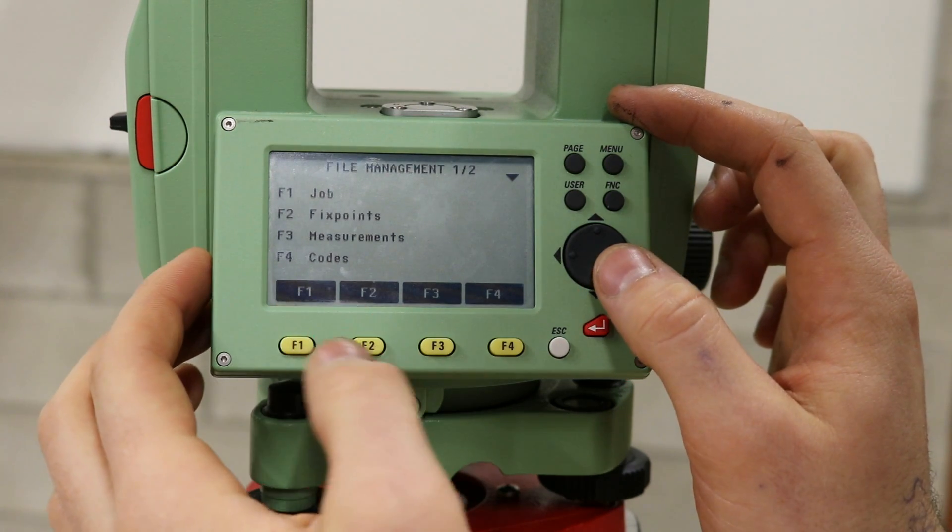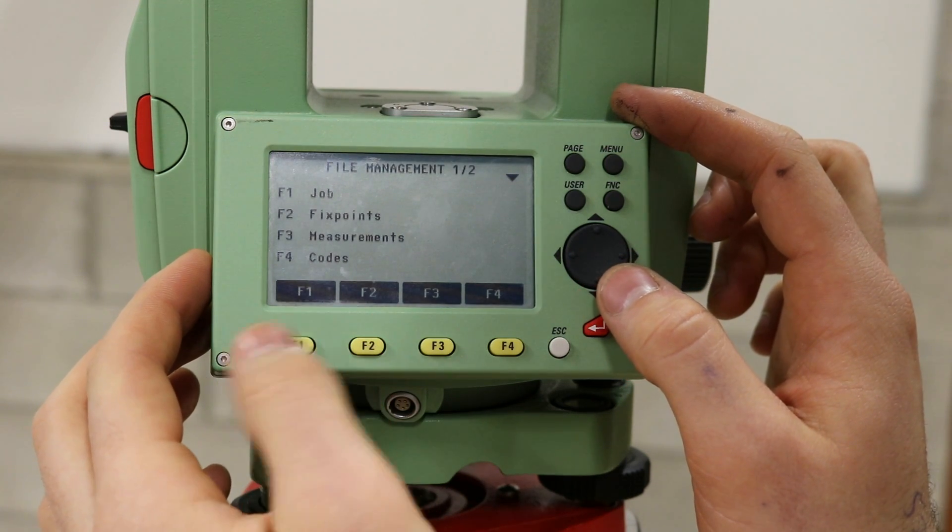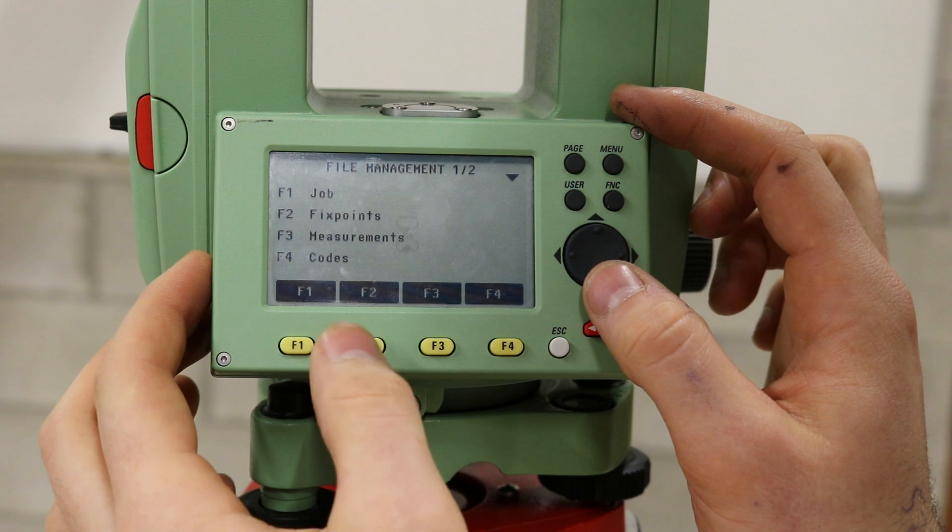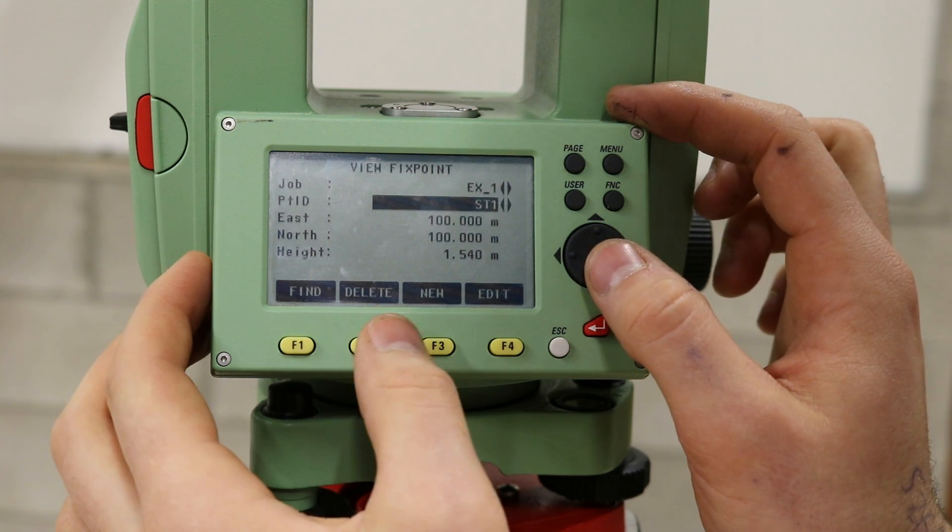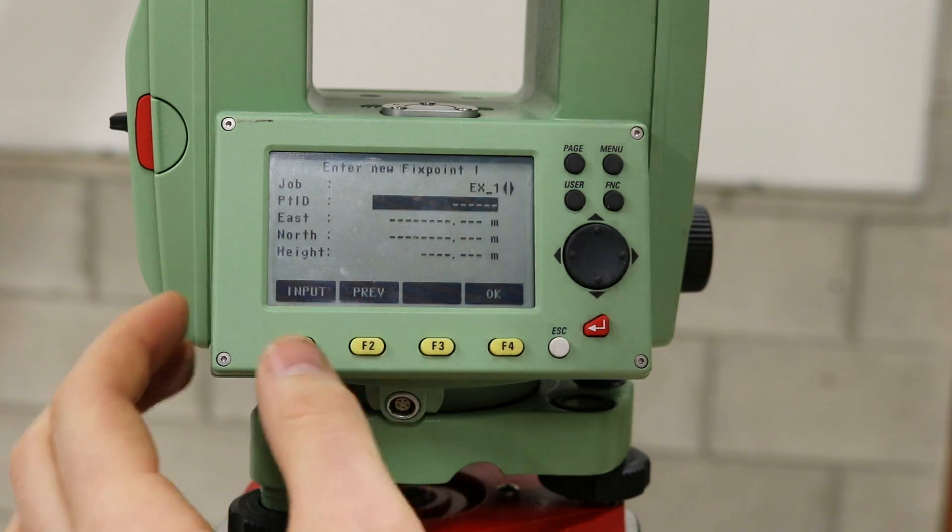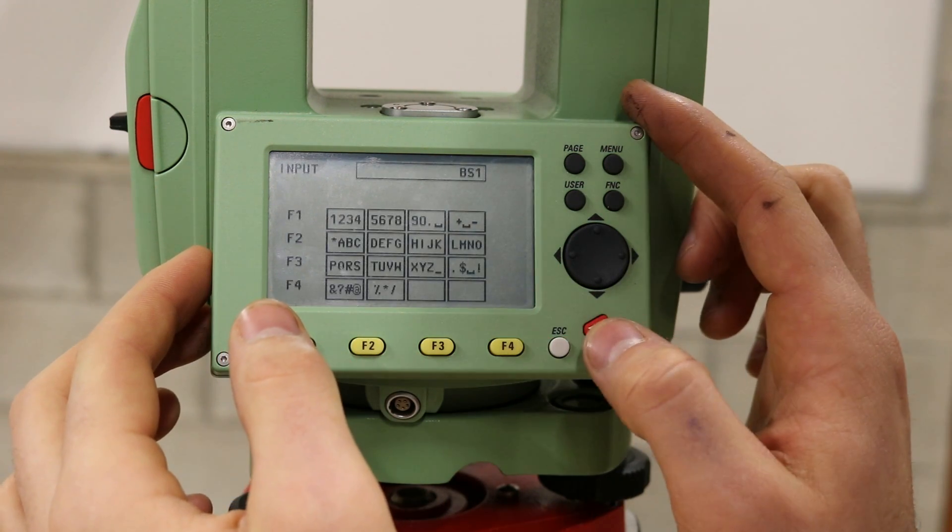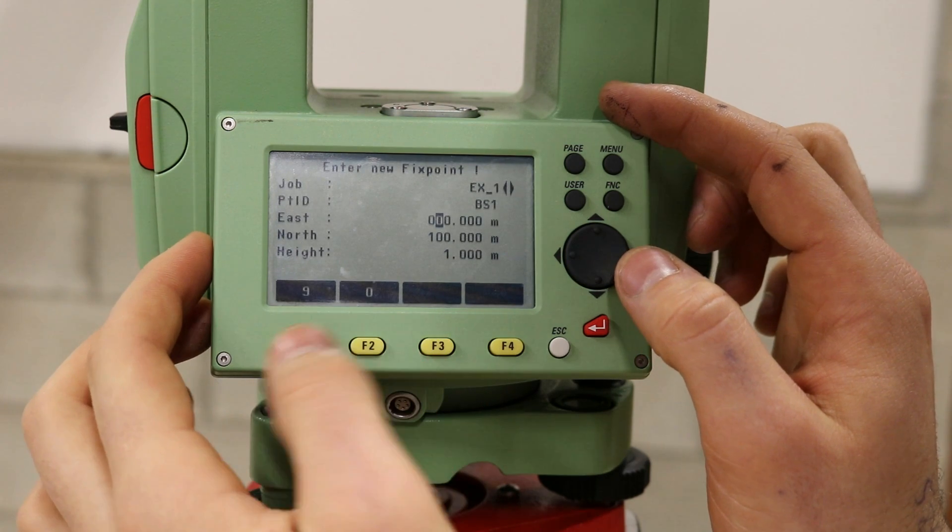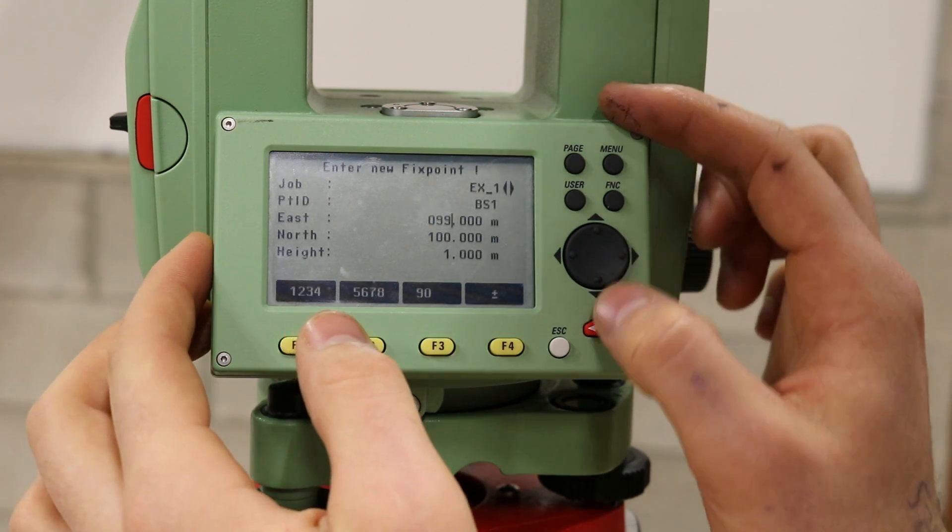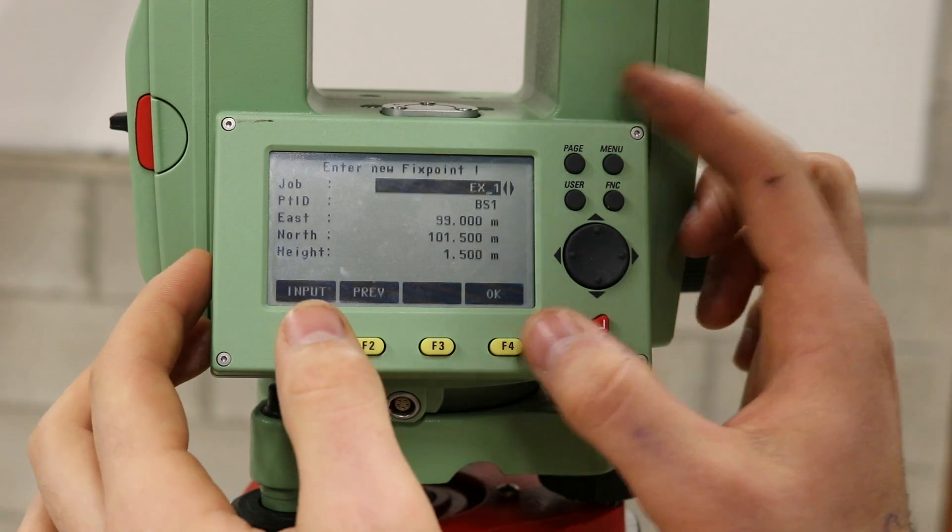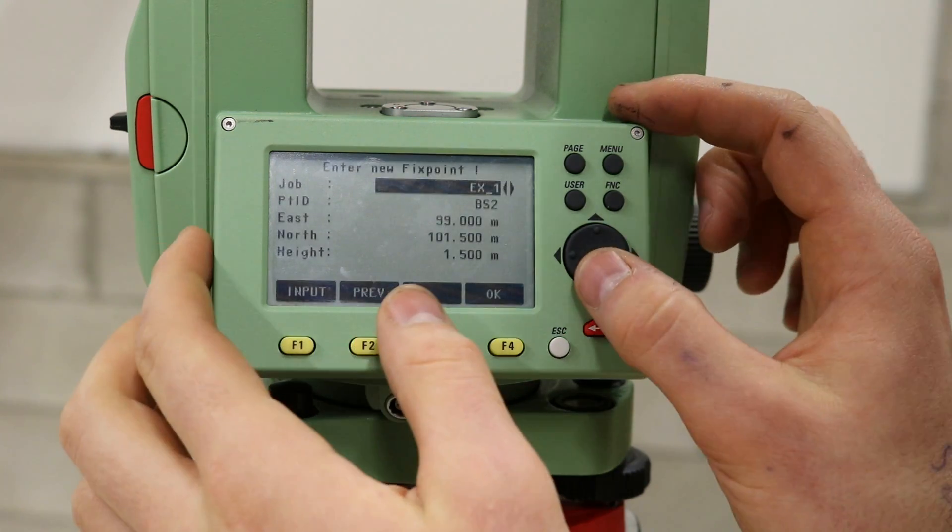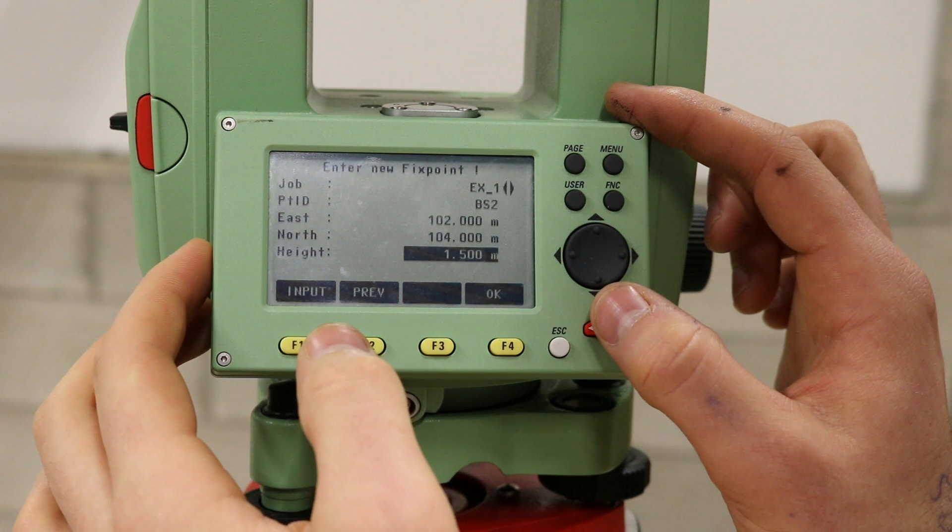Now, any known points must be entered into the machine. Enter the file management page again and press the F2 function key for fixed points. Create a new fixed point, such as BS1. Enter in the known coordinates of this point and press the OK function to confirm the details. Repeat this for all other known points, such as BS2, in this instance.